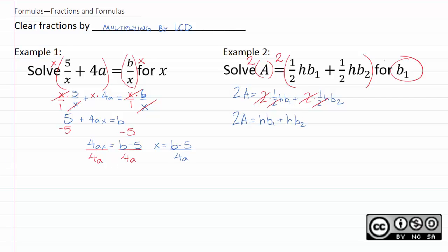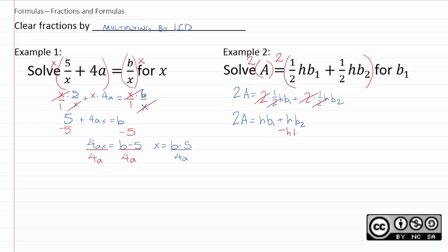Remember our objective here is to isolate b1, to get b1 by itself. So we continue by getting rid of everything that is not b1 — in this case that means we will subtract hb2. We'll have hb1 equals 2a minus hb2. And we get rid of the h by dividing, so now we have that b1 equals 2a minus hb2 divided by h. Now remember, some of you will feel a temptation to cross out the h's, but you can't do that — you would have to divide all three terms by h, and that can't happen. You actually cannot make this problem any simpler than this, so just leave it like that.